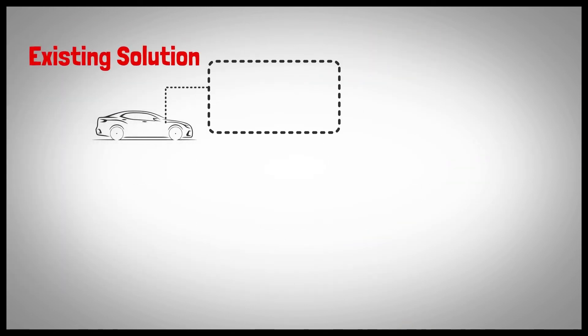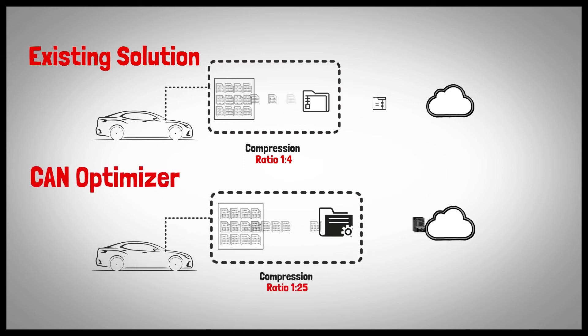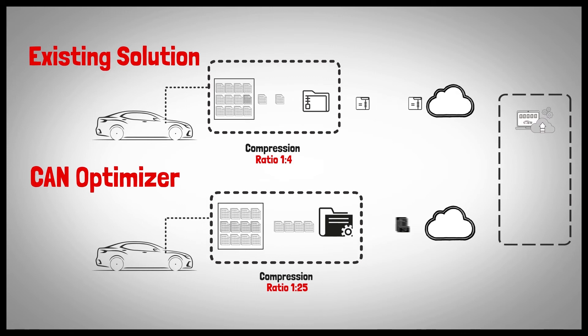Unlike existing solutions that can only provide a compression ratio of 1 to 4, CAN Optimizer can provide a compression ratio of 1 to 25, thereby reducing data transfer and storage costs by more than 80% with no data loss.